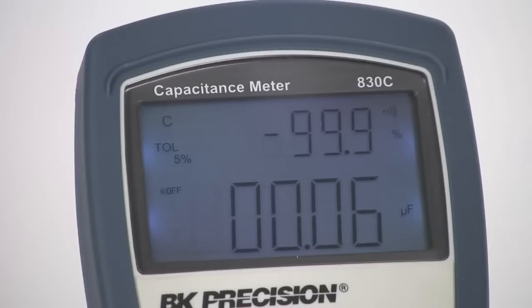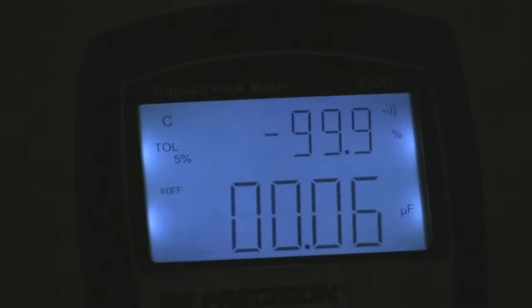Both meters feature large, easy-to-read primary and secondary displays with 11,000 and 10,000 counts respectively, as well as a bright, evenly-lit backlight.